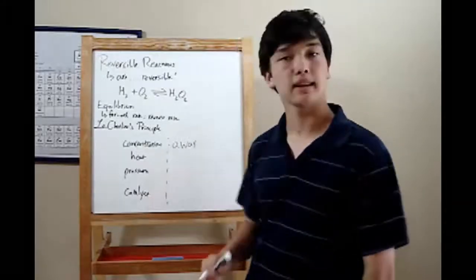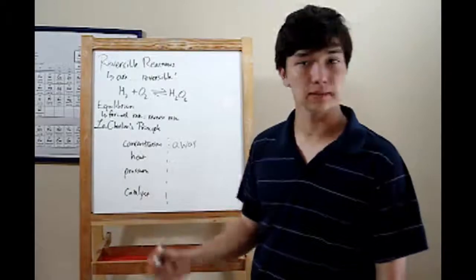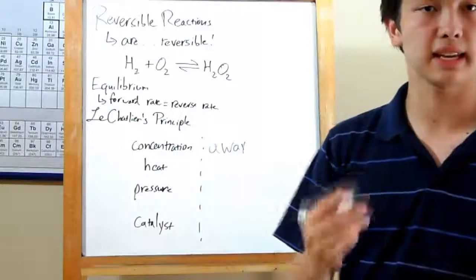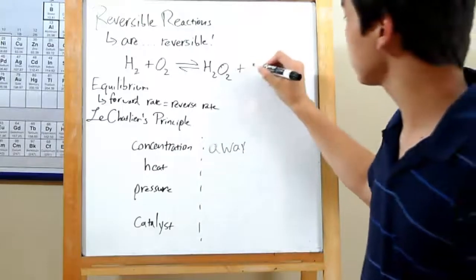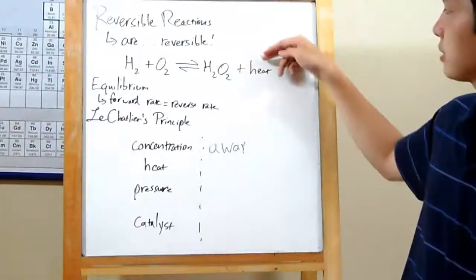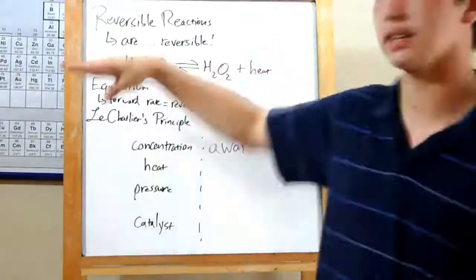Next is heat. Heat depends on your reaction. You can basically write it as part of your reaction. Let's say this reaction was exothermic, meaning heat came out of it. You could write in heat as a product. So if you increase the heat, it would shift away from the increase, just referring back to concentration again, like this.